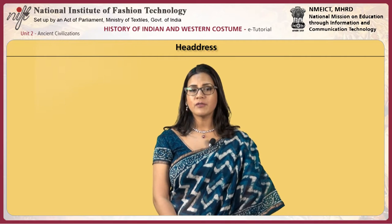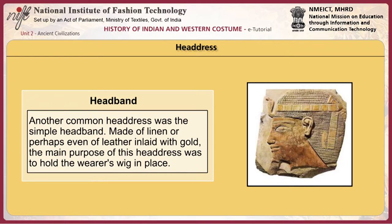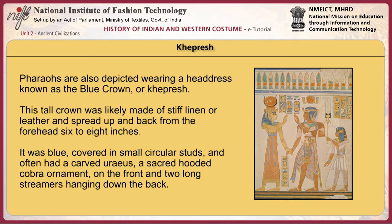The Egyptians had different kinds of headdresses. The Nemes headcloth was a stiff linen headdress that covered the head and most often had flaps that hung down the sides and over the shoulders. It was often full of bright colors. Another common headdress was the simple headband made of linen or leather inlaid with gold, mainly used to hold the wearer's wig in place. Pharaohs are also depicted wearing a headdress known as the blue crown or kheprish — a tall crown lightly made of stiff linen or leather, spreading up and back from the forehead six to eight inches, blue and covered in small circular studs, often with a carved uraeus — a sacred hooded cobra ornament — on the front and two long streamers hanging down the back.